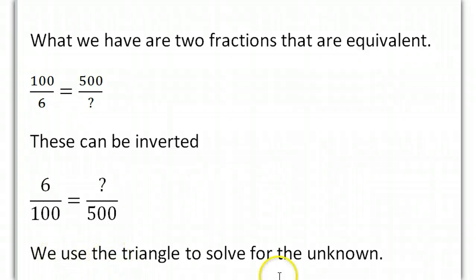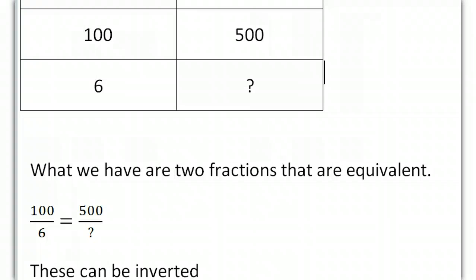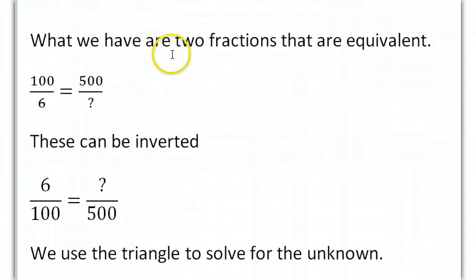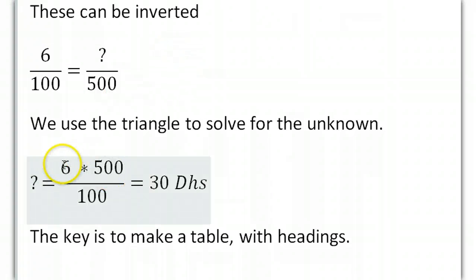What we do is we use a triangle to solve for the unknowns. So we get a triangle. Here it is. For this triangle what we need to do is we multiply on the hypotenuse and we divide by the value that's at the right angle.